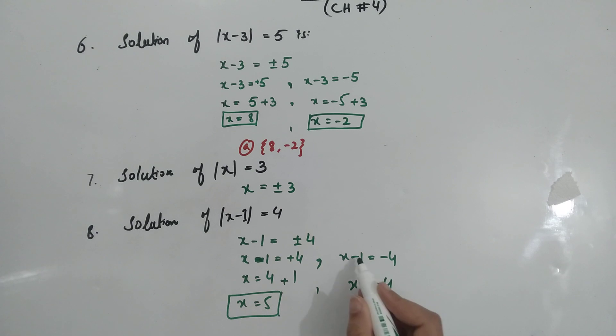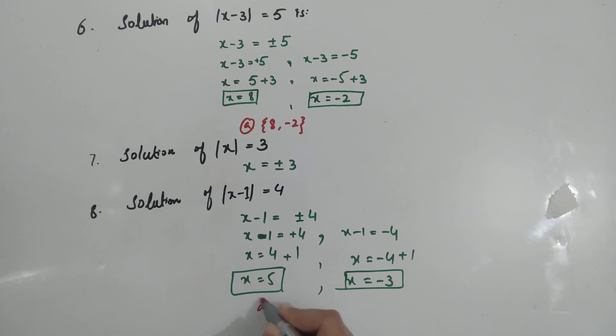Minus 4 minus 1 plus 1, x equal to minus 3. Answer option a: {5, -3}.